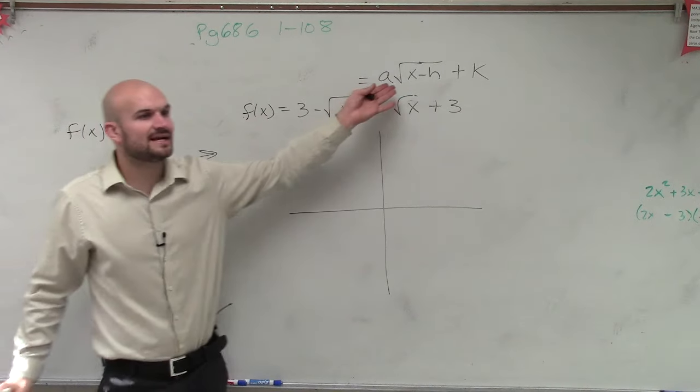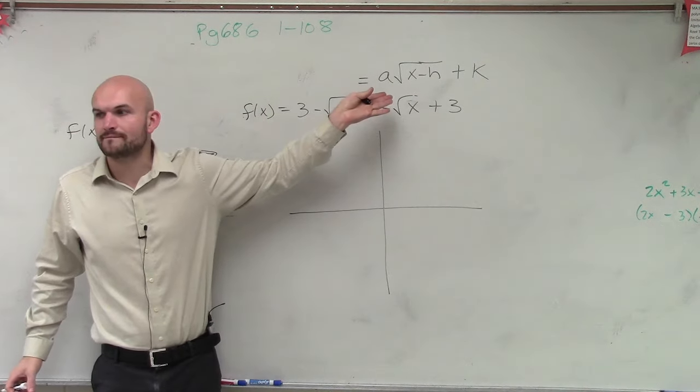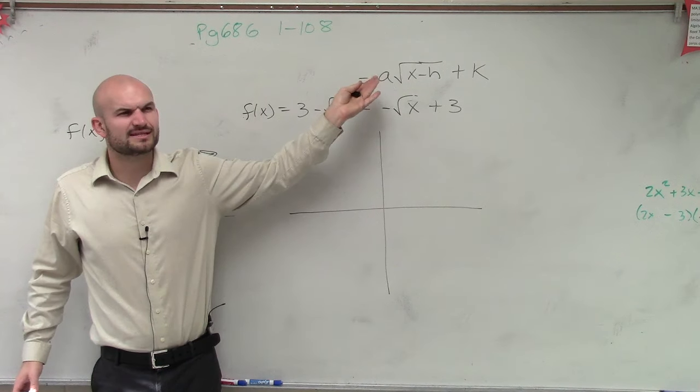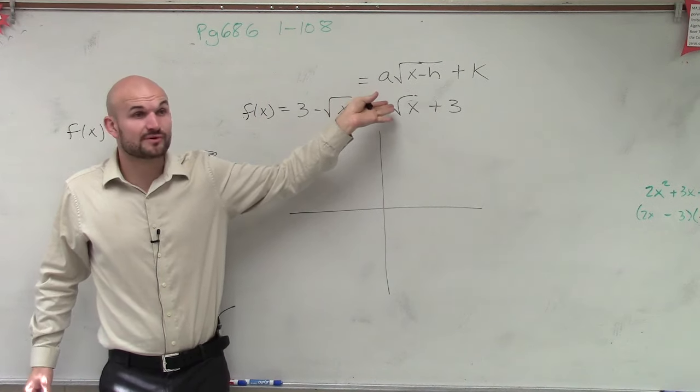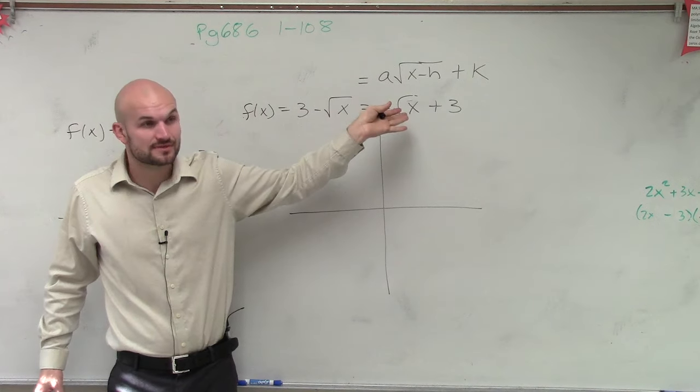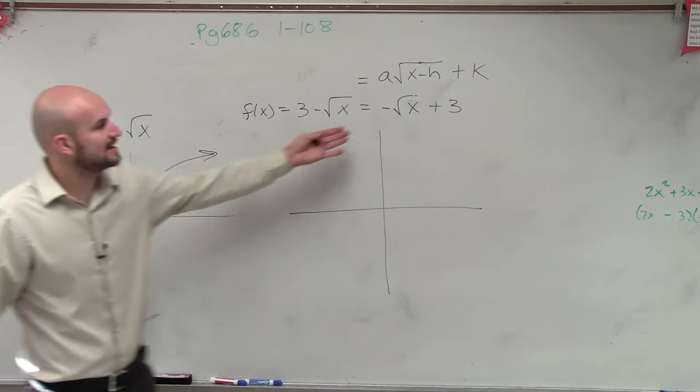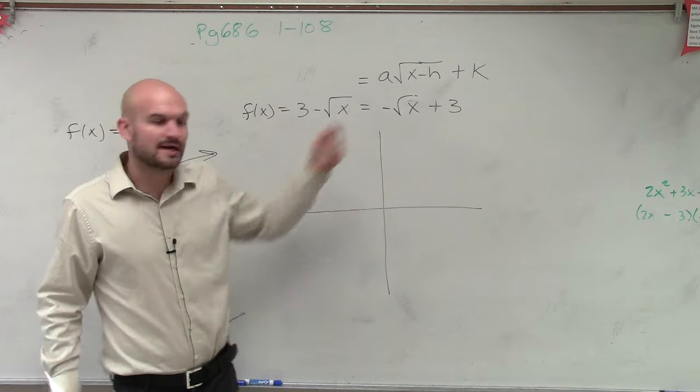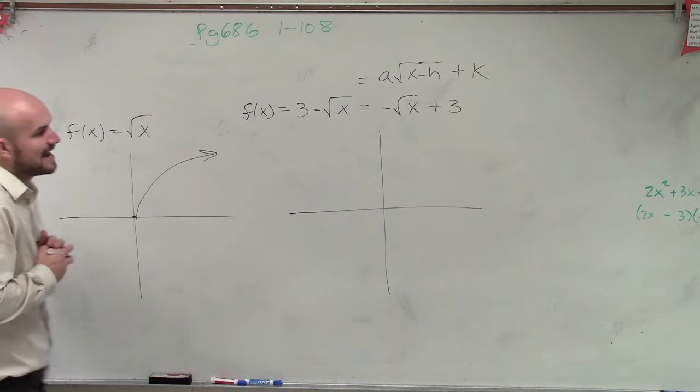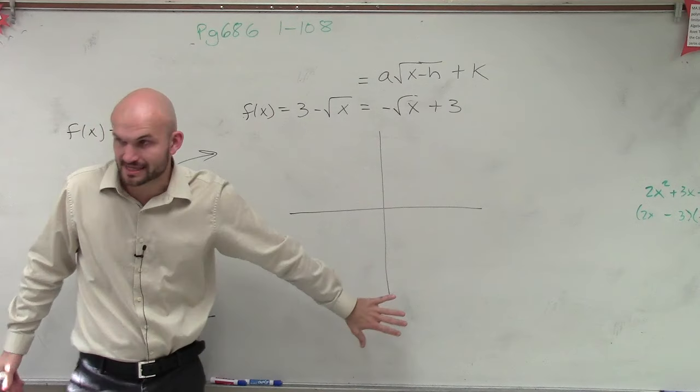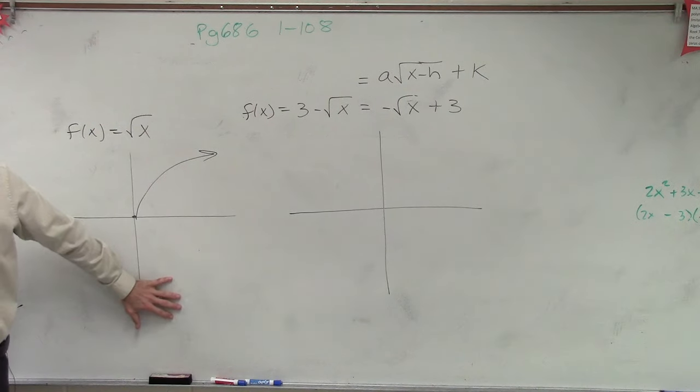Now what is a going to tell us? a is going to tell us if there's a reflection over the x-axis. So we look at this, and is our a, in this case, negative? Yes. So we now know that the graph is now going to be reflected over the x-axis.